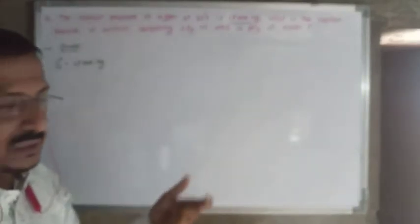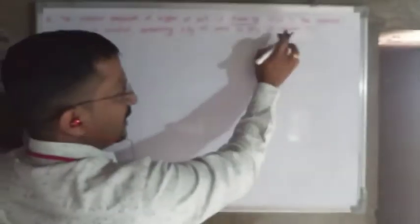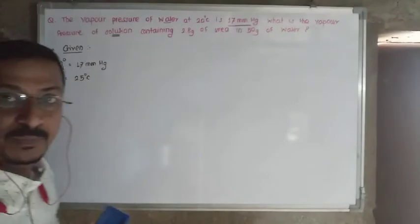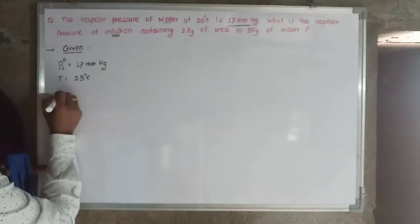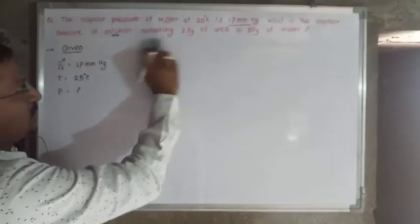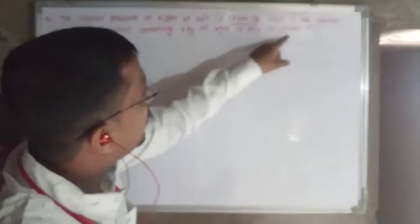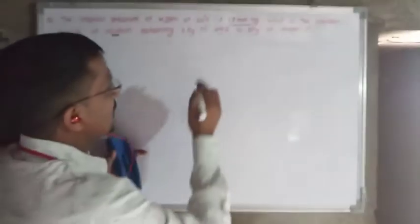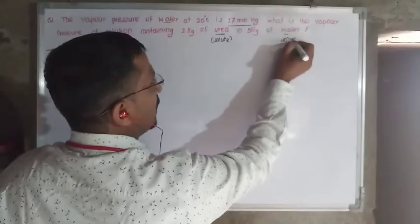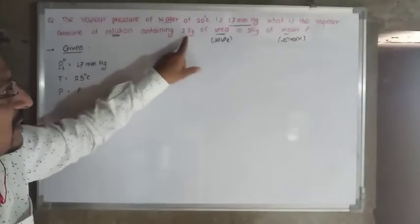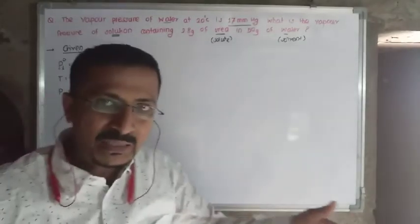Next sentence: what is the vapor pressure of the solution? So vapor pressure of solution is what we need to find — P is a question mark. The solution contains 2.8 grams of urea in 50 grams of water. Urea is the solute and water is the solvent. So the weight of urea, the solute, is 2.8 grams.